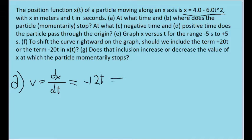And we want to find out when this is equal to zero. Well, it's pretty obvious that the only time when negative 12t is equal to zero is going to be when t is equal to zero. So this is the time at which the particle momentarily stops, when the time is equal to zero seconds.